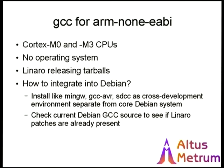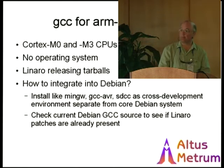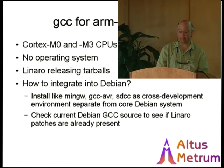These little ARM processors are really tiny — in packages five to ten millimeters square with very few pins and very little memory. The big part we're using has 128 kilobytes of flash memory; the smaller one has only 32 kilobytes. They don't have a native operating system, so we had to write our own. Linaro is actually releasing tarballs for this particular target — they work great — but that's a steaming pile of source code, most of which we already have in the Debian archive. I don't know how we're going to integrate it into Debian yet.